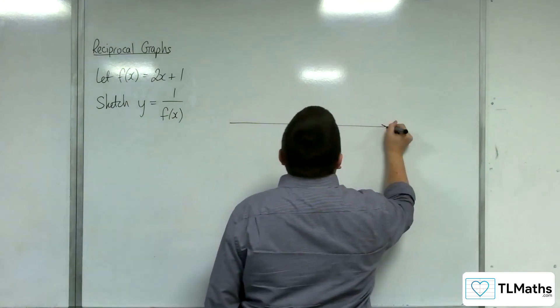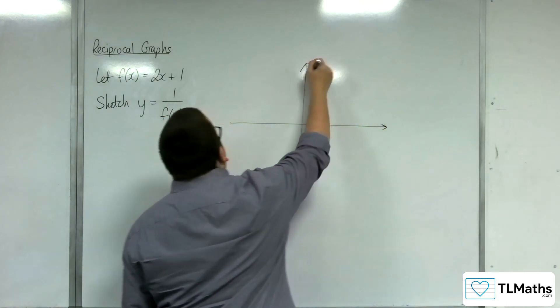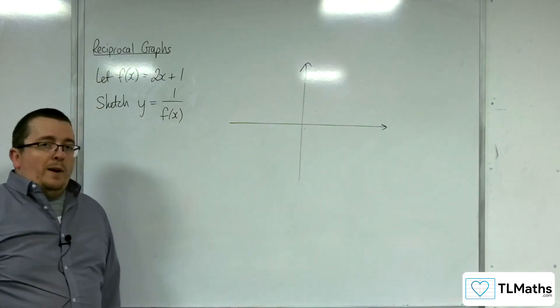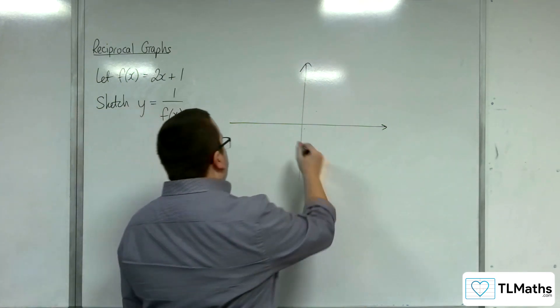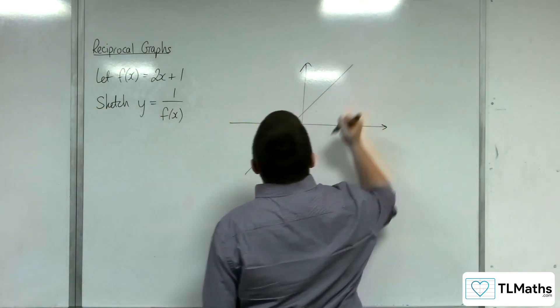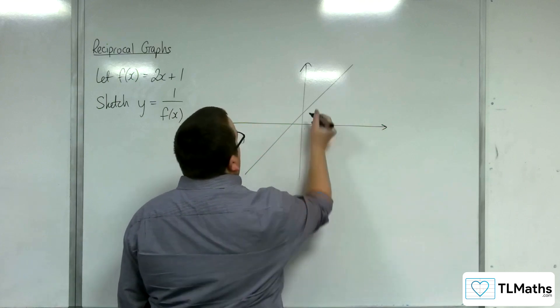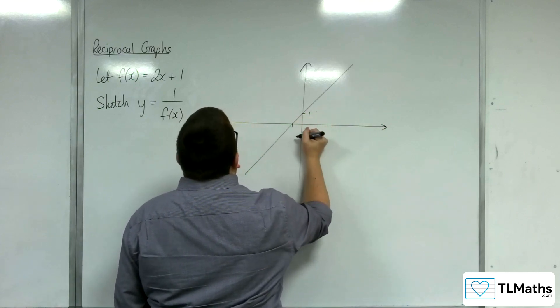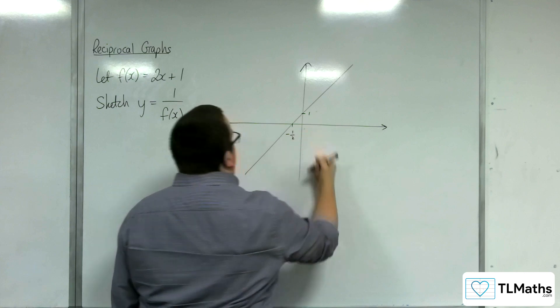So what we'll do is we will sketch y equals 2x plus 1. So here's y equals 2x plus 1. That point is 1, and that point is going to be minus 1 half.